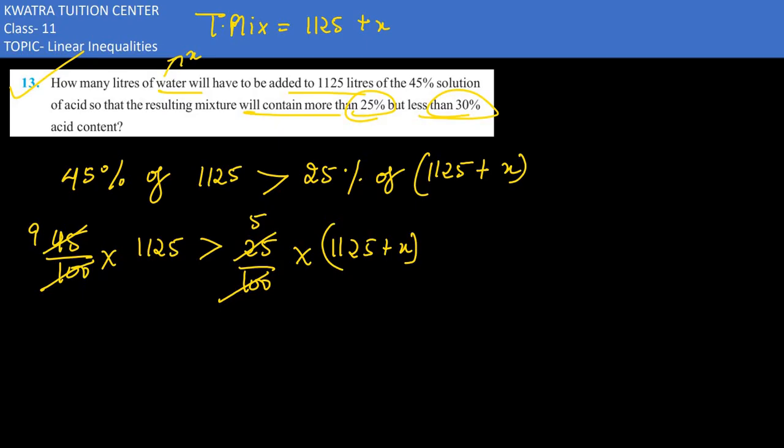And 5 from 5, we can cancel. So dividing 1125 with 5 in this case, that would give you 225. And we have to multiply it with 9. That's 2025 greater than 1125 plus x.